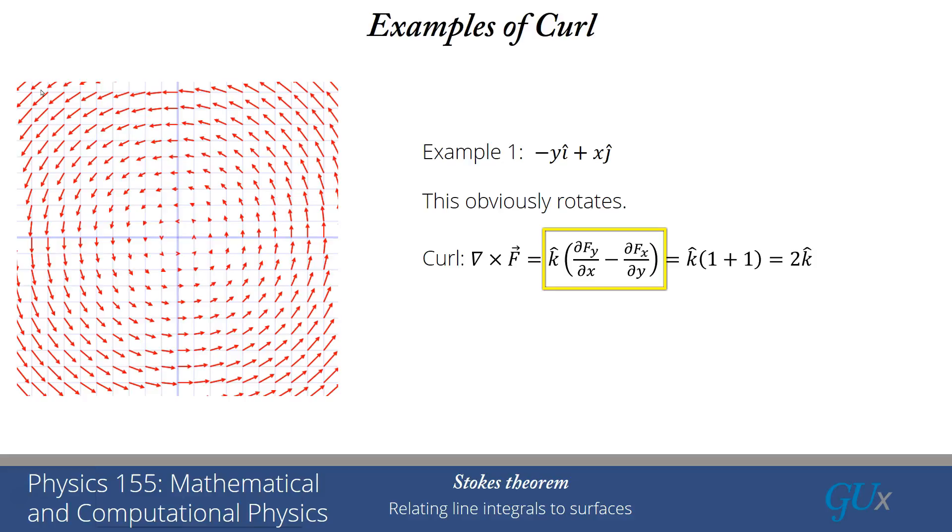Well, fy is equal to x, so d by dx of x is just 1. And fx is equal to minus y, so d by dy of fx is minus 1. But there's a minus sign in the definition of the curl, so I end up getting 1 plus 1, which is 2. This curl is just equal to 2 times the unit vector in the z direction.